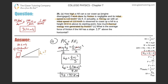We handle this using the non-conservative work formula, since friction is a non-conservative force. We're looking for the thermal energy, which equals the non-conservative work done by friction. The equation is: the work due to friction equals the final energy minus the initial energy.